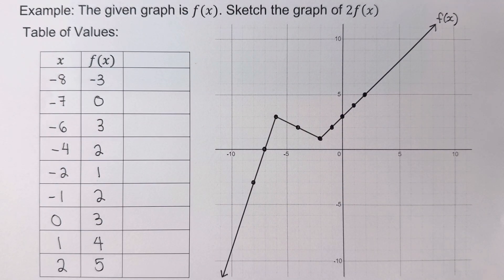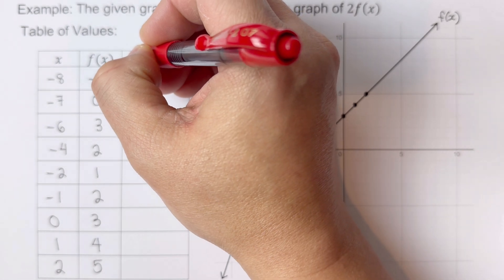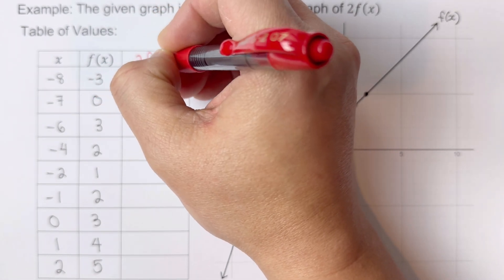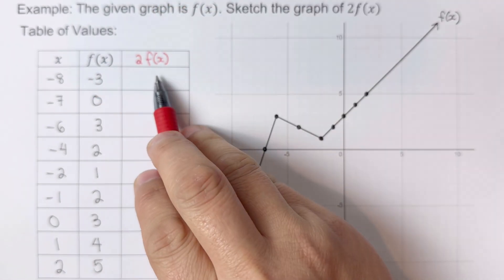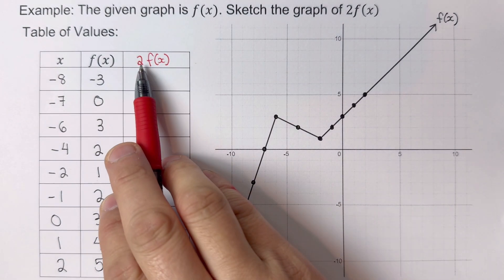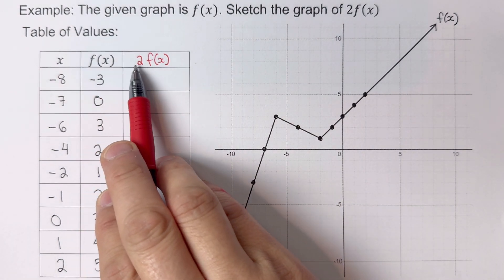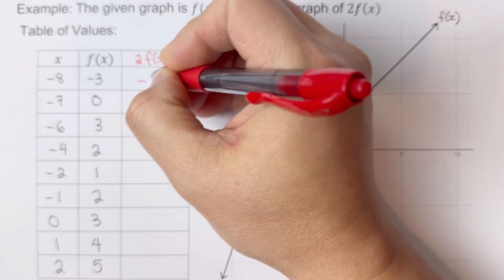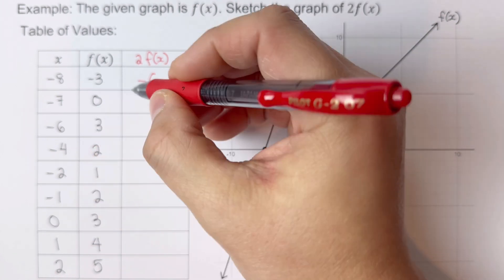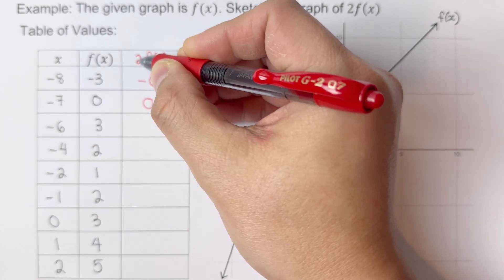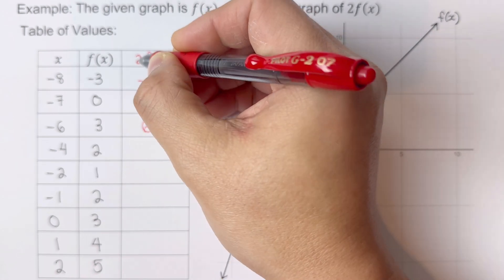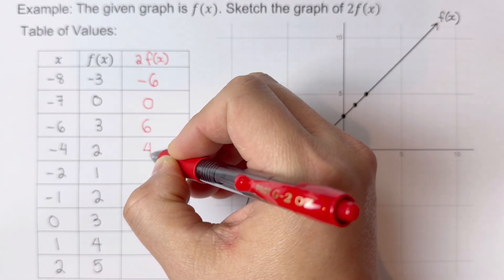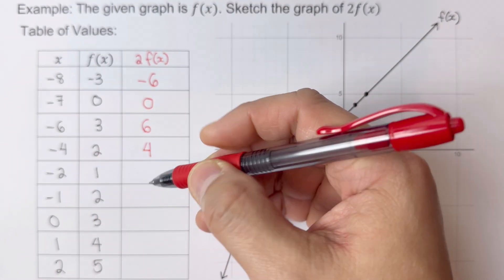Since we want to sketch the graph of 2f(x), I will create a column for 2f(x). To determine the values, we multiply f(x) by 2. So 2 times negative 3 is negative 6, 2 times 0 is 0, 2 times 3 is positive 6, 2 times 2 is 4, and so on.